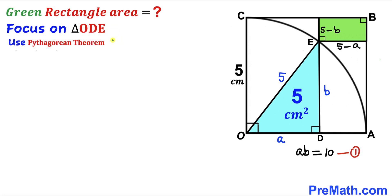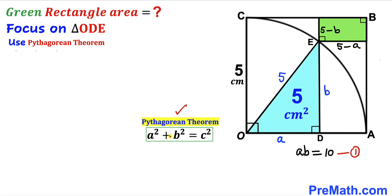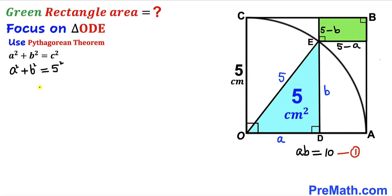Next, we apply the Pythagorean theorem to the blue right triangle ODE. With the hypotenuse equal to 5, we have a² + b² = 5², which simplifies to a² + b² = 25. We'll label this Equation 2.